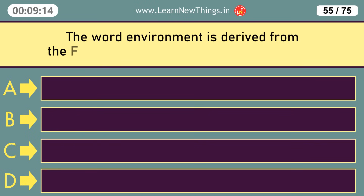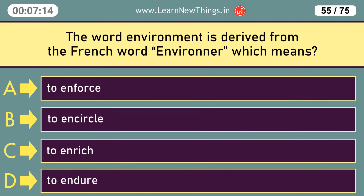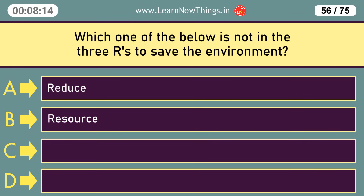The word environment is derived from the French word environer which means to encircle. Which one of the below is not in the three R's to save the environment? Resource.